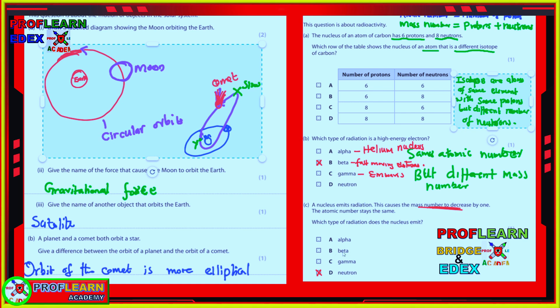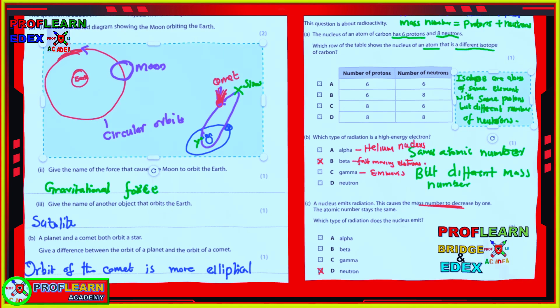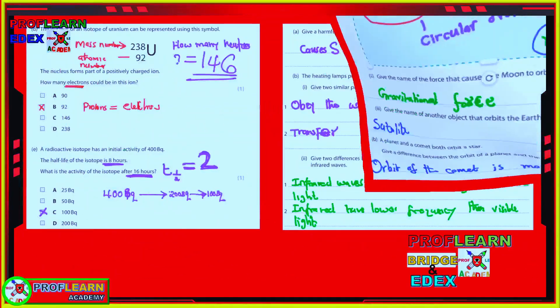If the mass number remains the same but the atomic number changes, that is beta decay. If gamma radiation is emitted, nothing in the mass number or atomic number changes — the nucleus just releases energy. If you are getting value from this video and you're new to ProfLearn, consider subscribing to be notified of the next part.